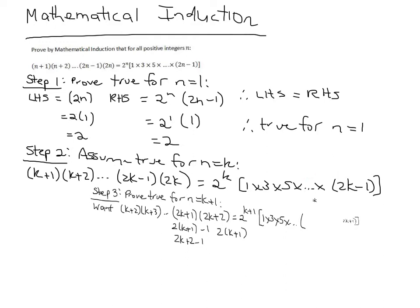Now, compare this with what you've got here. Always compare them and see if you can substitute or do some sort of manipulation. If you look at step 3, we've got k plus 2, k plus 3, up to 2k plus 2. So let's compare it with this.